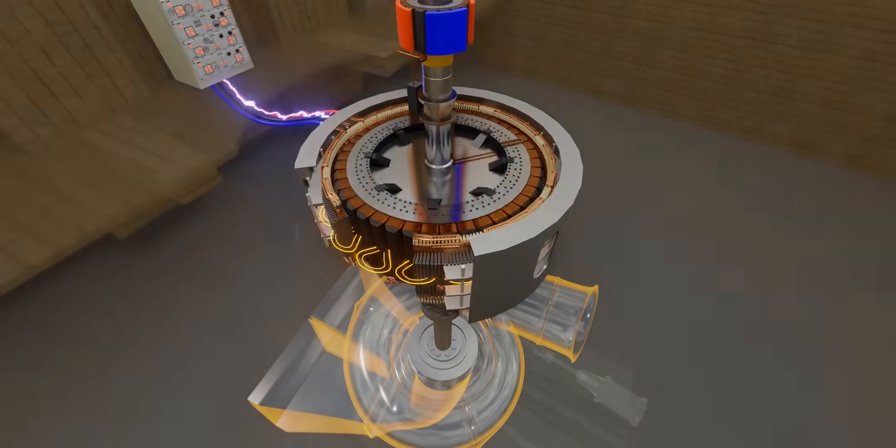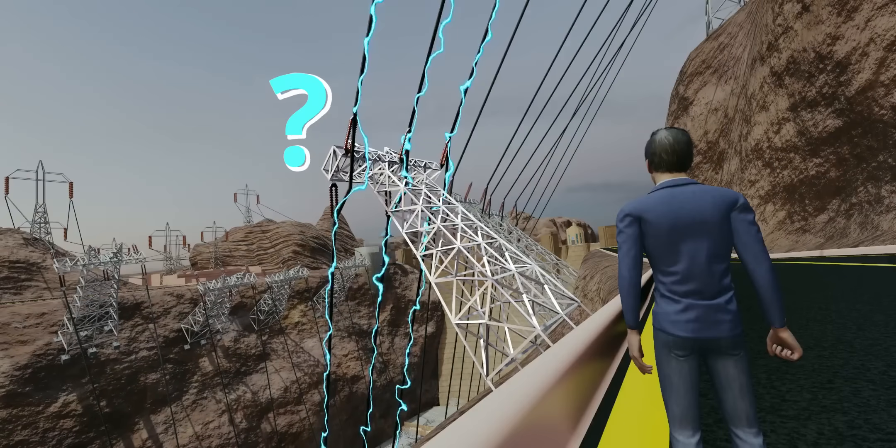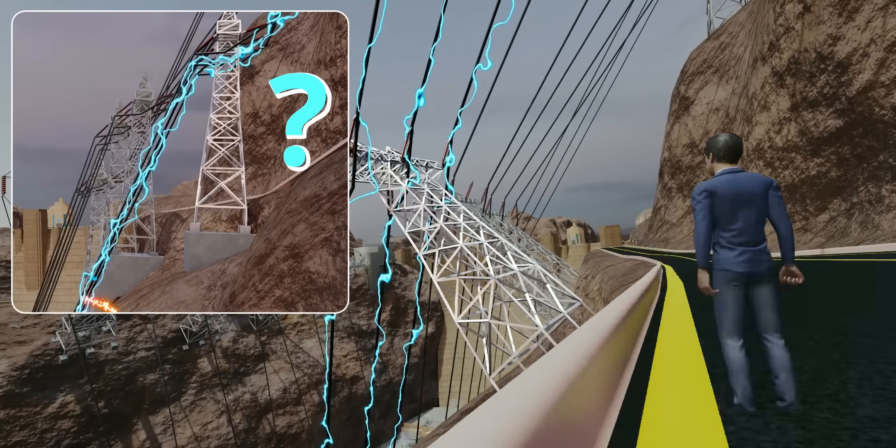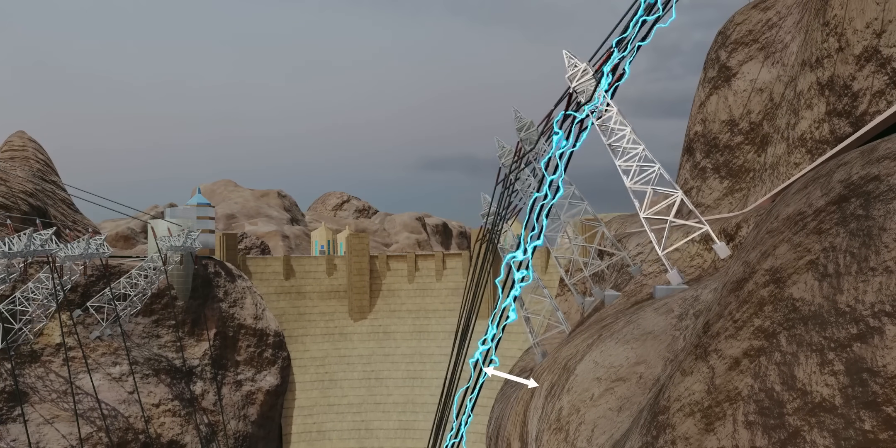This electricity reaches transmission towers. Did you notice something strange here? Why are these transmission towers dangerously inclined? Why didn't they install the towers vertically? If they had installed them vertically, the distance between the cable and canyon would have been reduced.